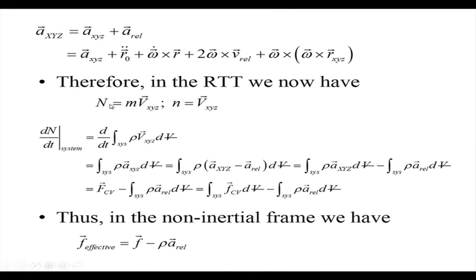The time derivative of velocity gives acceleration, and the acceleration of small xyz can be written as acceleration with respect to capital XYZ minus a_relative, where a_relative is the collection of extra terms. So rho times a_XYZ integrated over the volume is the force acting on the control volume by Newton's second law, with a correction term: force on the control volume minus the integral of rho times a_relative dV. This means you use the Navier-Stokes equation replacing force by force minus mass times acceleration — that is, the pseudo force.